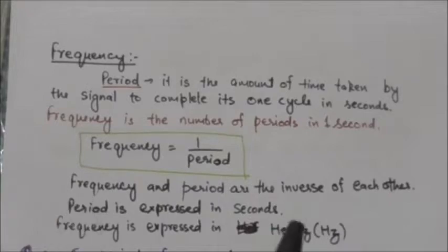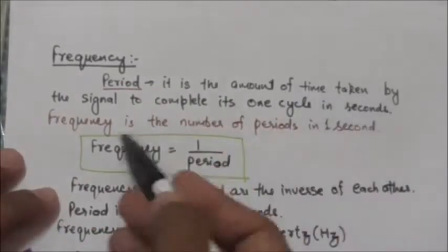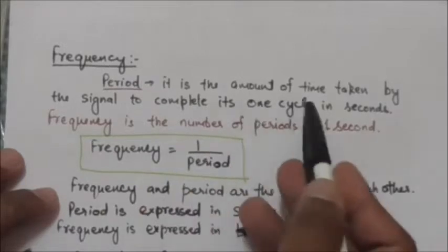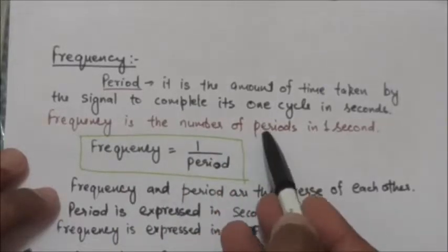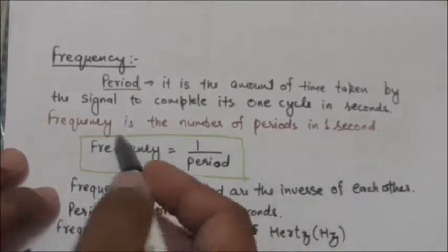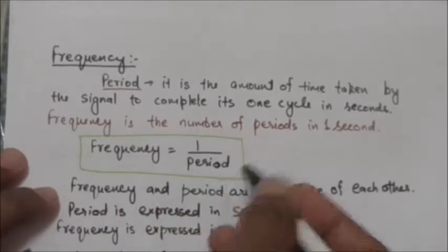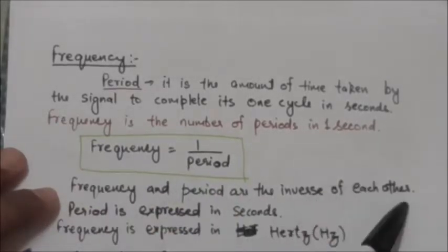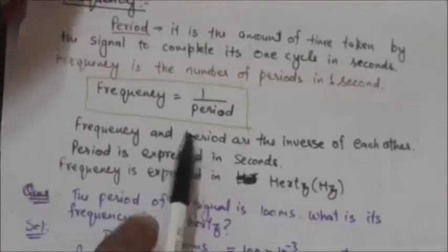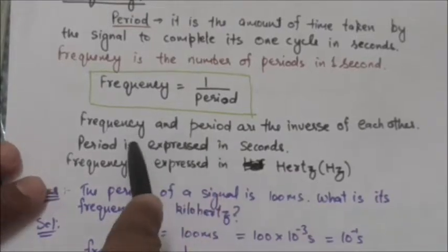To understand the frequency of a signal, we must first know about the period. The period is the amount of time in seconds taken by the signal to complete one cycle. The frequency of a signal is the number of periods in one second. The formula is: frequency equals one divided by period. Frequency and period are the inverse of each other — period is expressed in seconds and frequency is expressed in hertz.